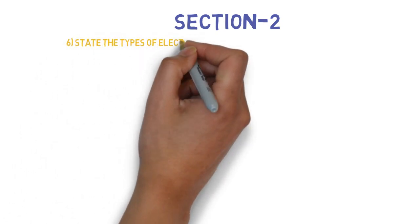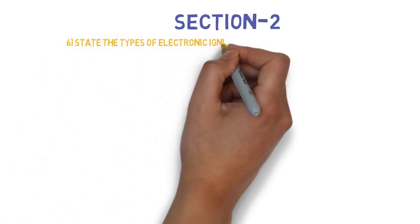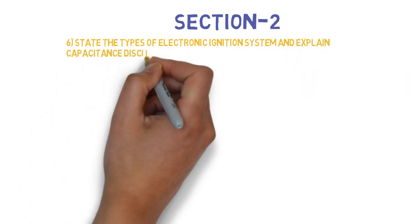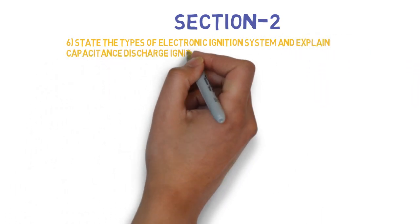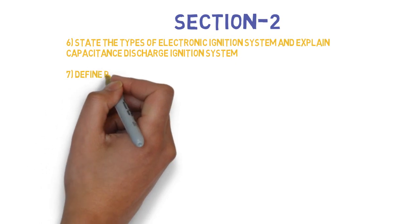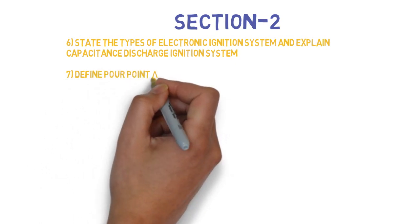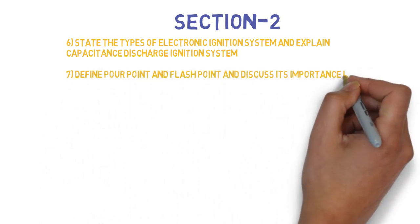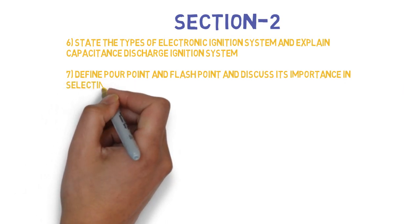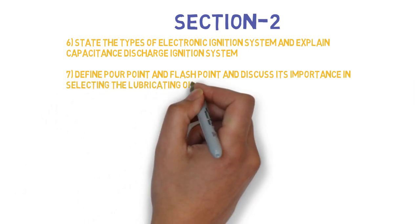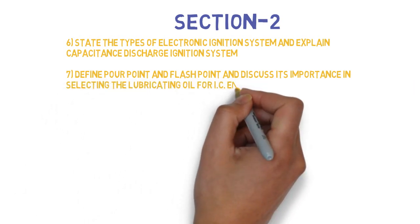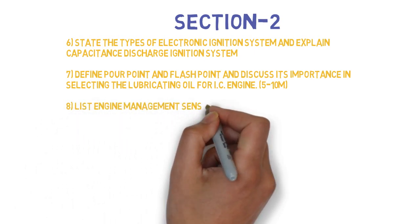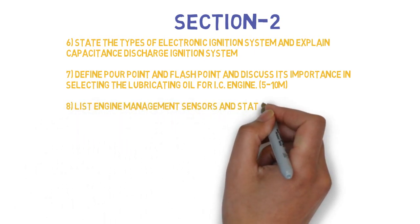Let's go to Section 2 wherein the first question is: State the different types of electronic ignition systems and explain capacitance discharge ignition system. Next question is: Define pour point and flash point and discuss its importance in selecting the lubricating oil for IC engine. Next question is: List engine management sensors and state its importance. This can come for 5-10 marks.